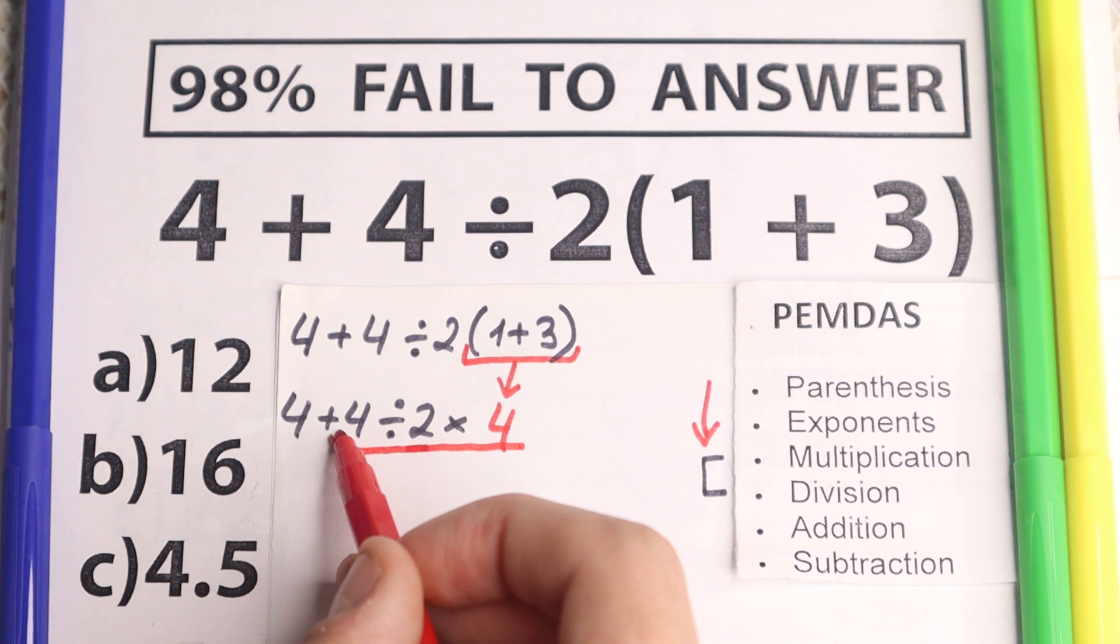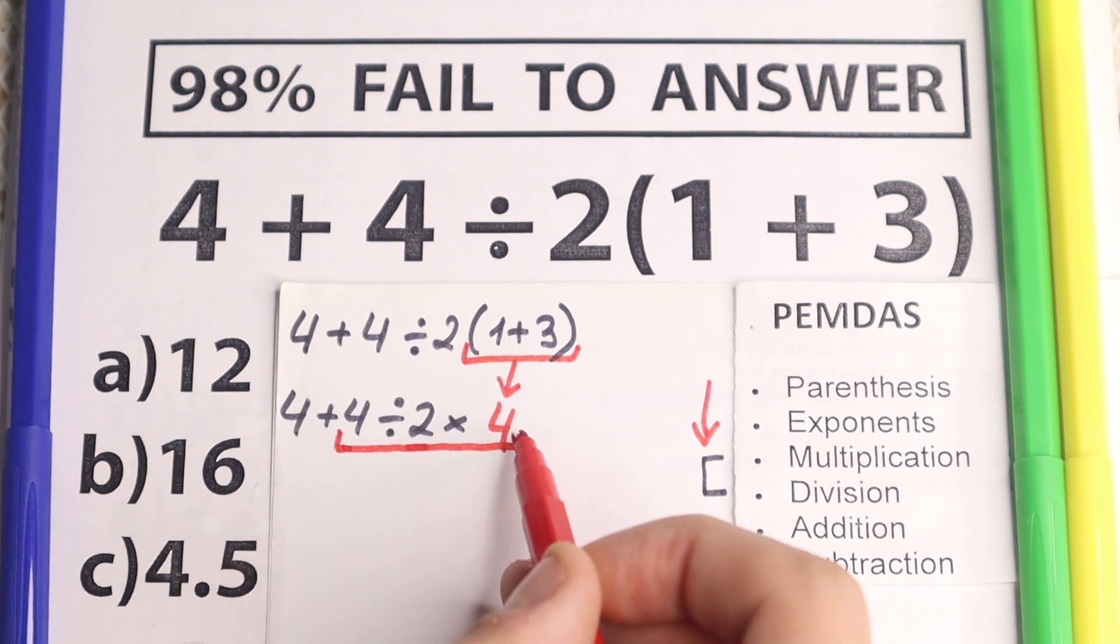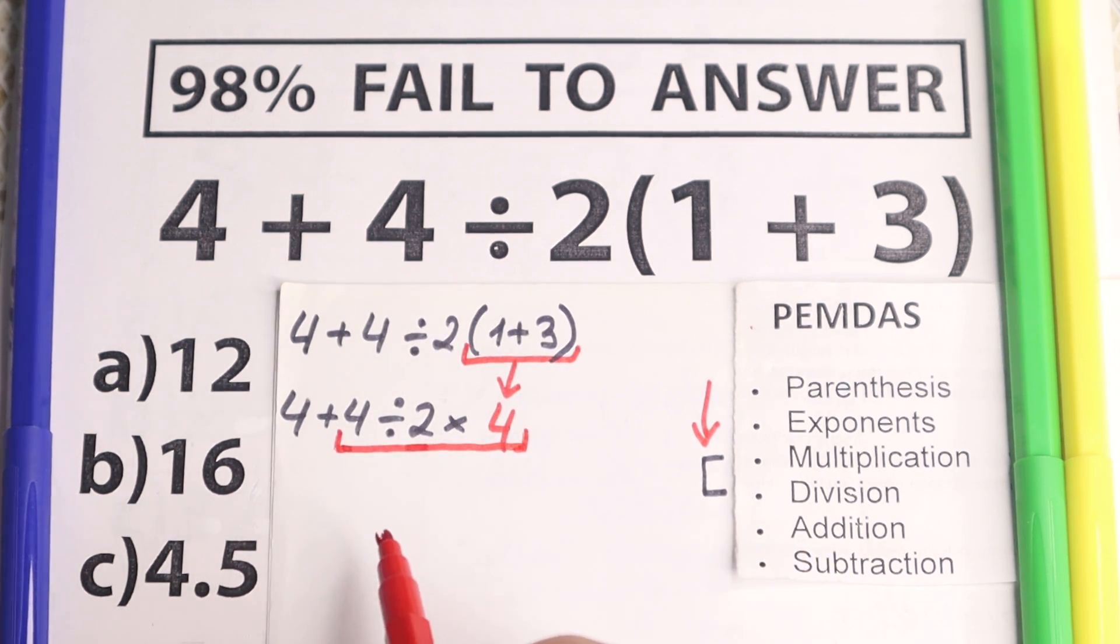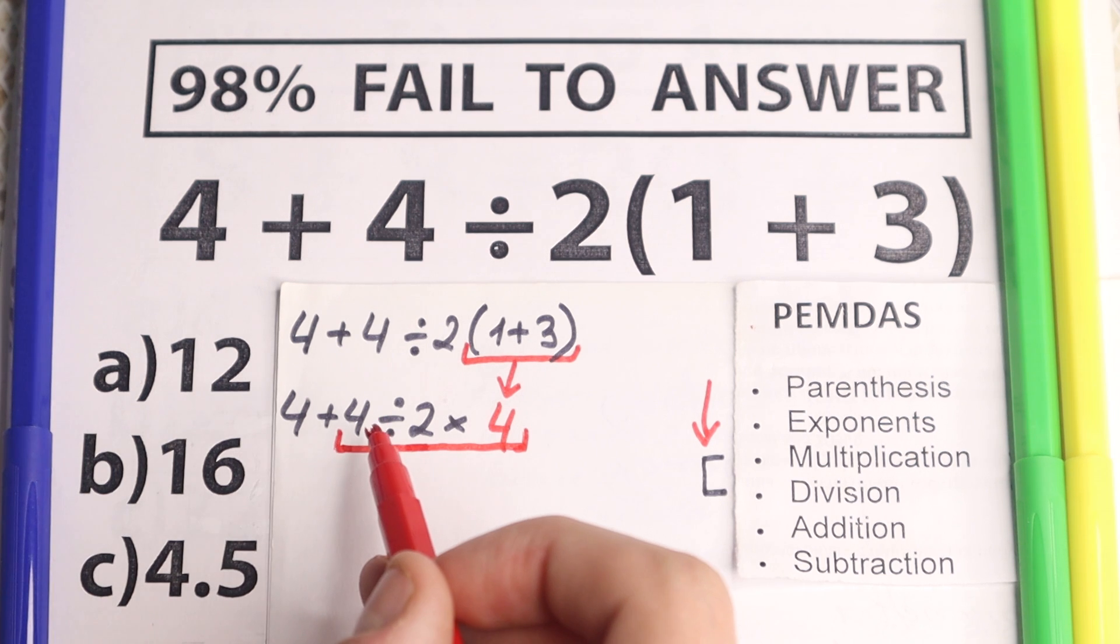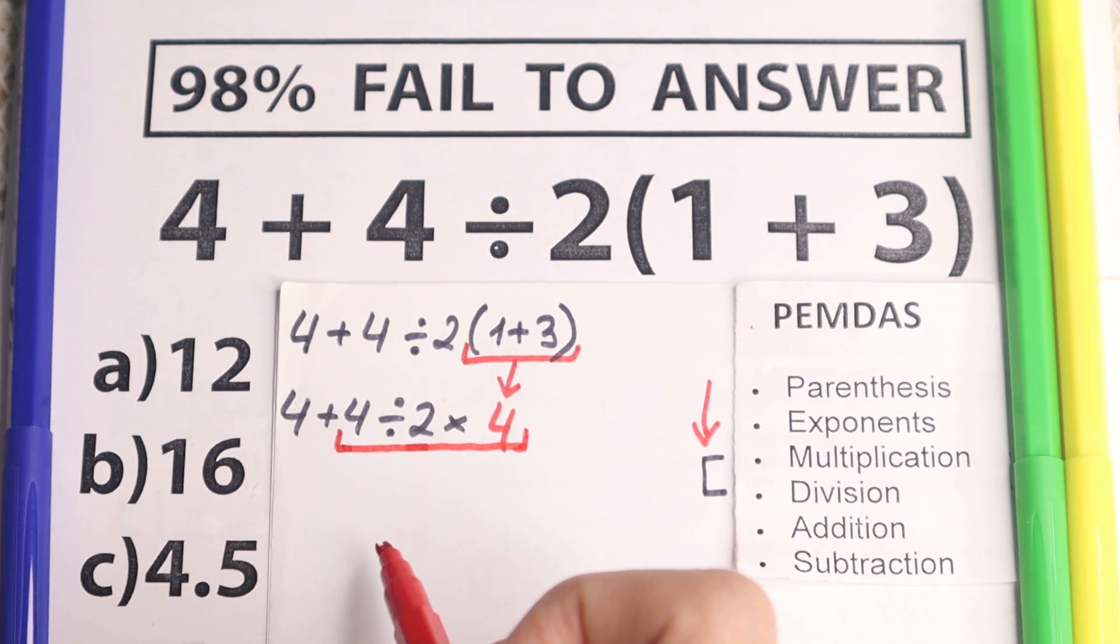After parenthesis, we have this second step with multiplication and division. We have this step right here. And here is the question. Do we do division first and multiplication, or do we do multiplication first and division? OK, here is the answer. We need to scan what is the first sign from left to right.